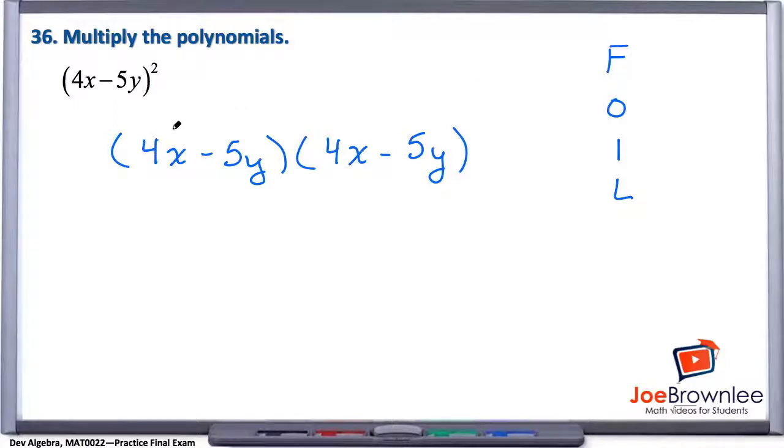FOIL, F means first to first. So our first term to our first term. 4x times 4x, well, that gives us 16x squared.